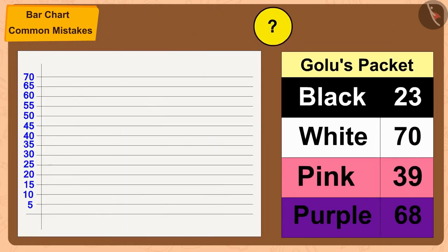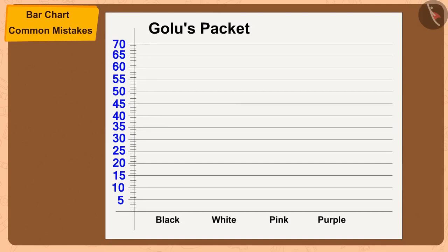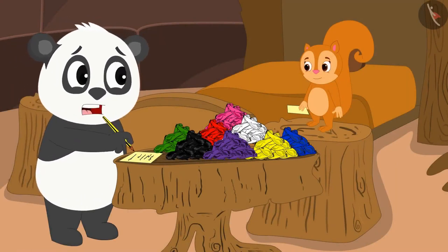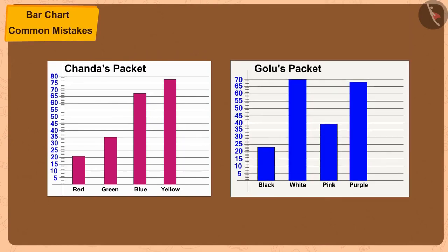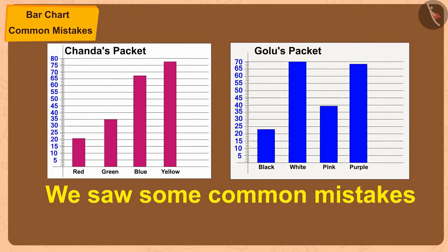There is a very easy solution for this too. We have to make 5 small equal parts between these numbers. Now, can you show 23 on this scale? Golu quickly showed the number of black balloons — 23 — by making a rectangle of height 3 small parts higher than 20. Chanda, I understood my mistake. From now on, before making a bar chart, I will decide the scale and only then start making the bar chart. Chanda and Golu made their own bar charts and with the help of that information, decorated Bhola's house with beautiful balloon patterns for his birthday. Children, in this video we saw some common mistakes related to bar charts.